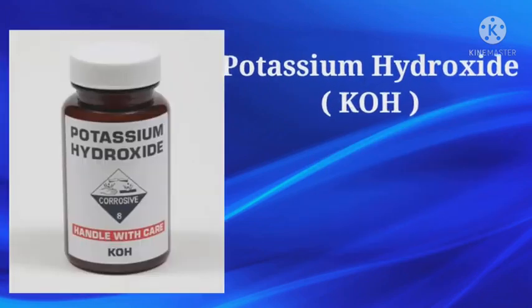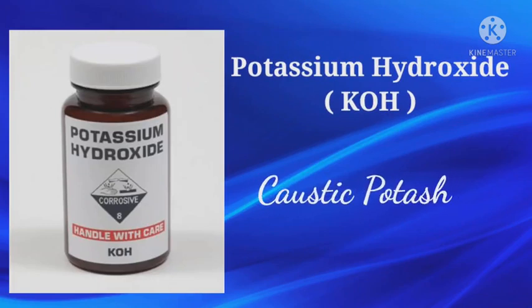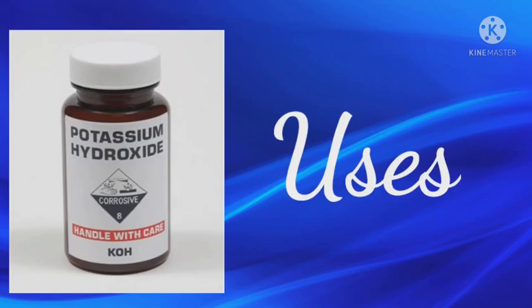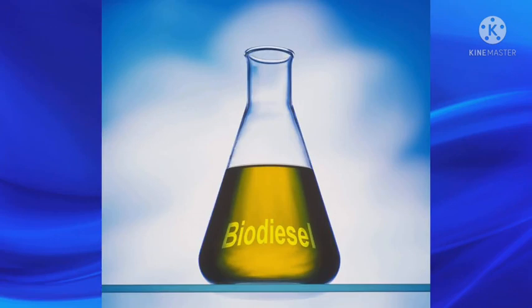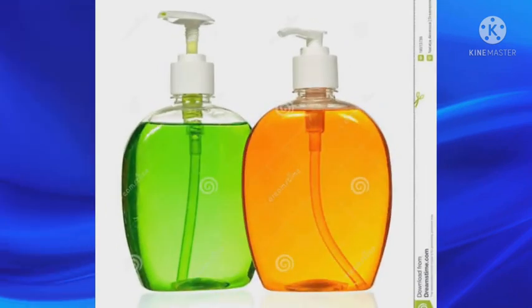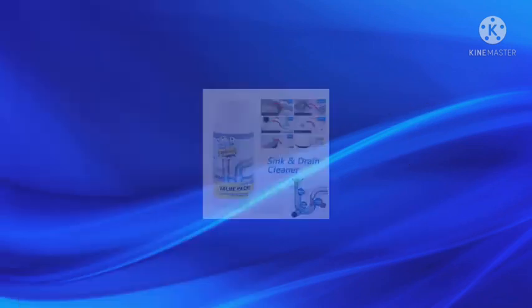Potassium hydroxide. It is commonly called caustic potash. Uses: It is useful in the preparation of biodiesel. It is also used in the production of disinfectants as well as liquid soaps, lotions, shampoos and drain cleaners.